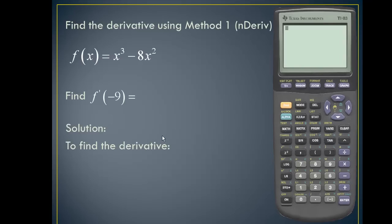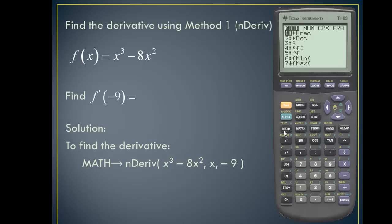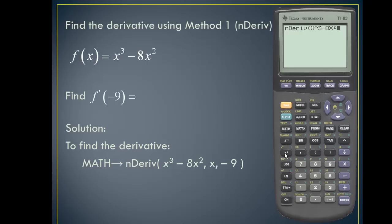Here's the solution. To find the derivative, we'll enter the math area and look for the nDeriv function, so I'll scroll down and press enter. I'll next put in my expression: x raised to the third power minus 8x squared. I'll insert a comma, then the variable of our expression, which is x, then another comma, and we'll evaluate the derivative at negative 9. I'll close off the parentheses for a value of 387.